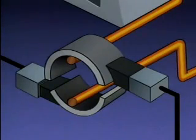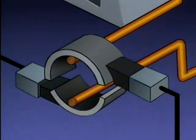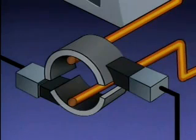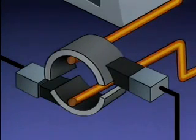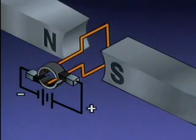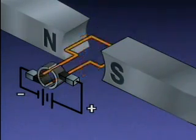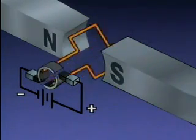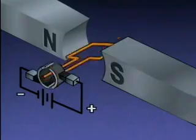However, the commutator has physically changed the direction in which the current flows through the armature. This change in direction changes the polarity of the magnetic field created by the armature. So the brushes and the commutator in a DC motor enable the armature to change its magnetic field, and as a result, the armature turns continuously.